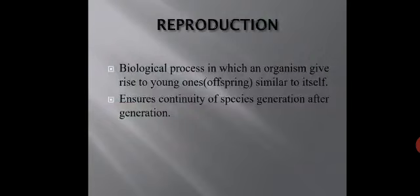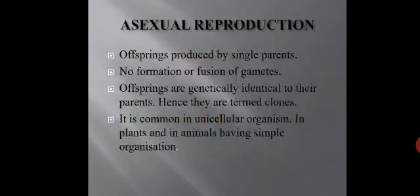We are going to study asexual reproduction in detail. In asexual reproduction, offspring are produced by a single parent and there is no formation or fusion of gametes. Since only a single parent is involved, there is no requirement for gamete formation at all. The offspring are genetically identical to their parents — not only genetically but also morphologically identical, meaning they are similar in appearance. Such offspring which are morphologically and genetically similar to their parents are known as clones. So offspring produced by asexual reproduction can also be termed clones.